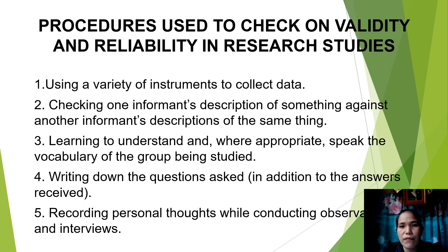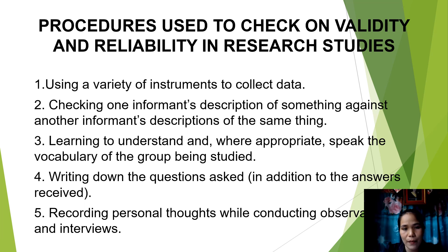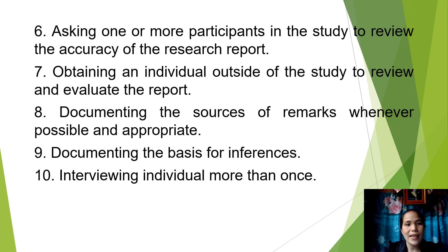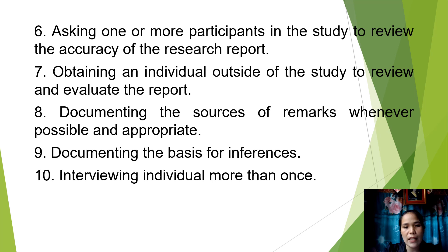The procedures used to check on validity and reliability in research studies: one, using a variety of instruments to collect data; two, checking one informant's description of something against another informant's description of the same thing; three, learning to understand and where appropriate speak the vocabulary of the group being studied; four, writing down the questions asked in addition to the answers received; five, recording personal thoughts while conducting observation and interviews; six, asking one or more participants in the study to review the accuracy of the research report; seven, obtaining an individual outside of the study to review and evaluate the report; eight, documenting the sources of remarks whenever possible; nine, documenting the basis for inferences; and ten, interviewing individuals more than once.